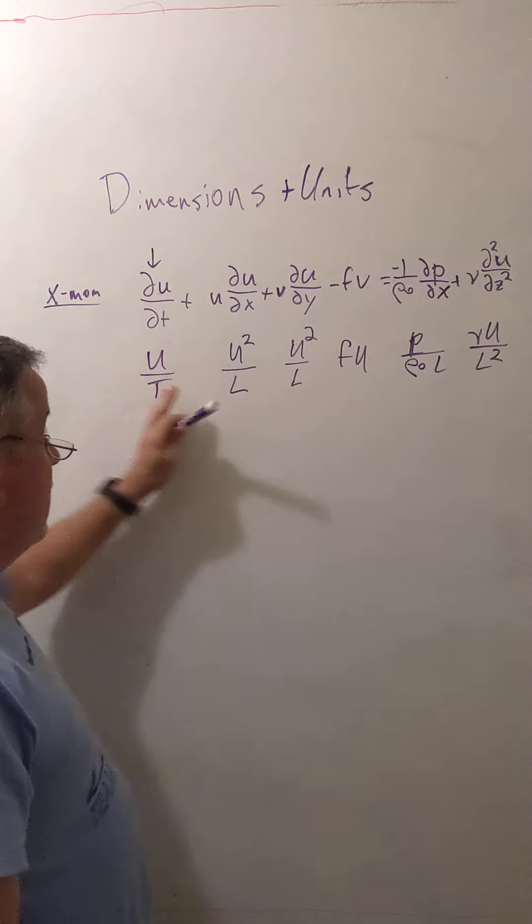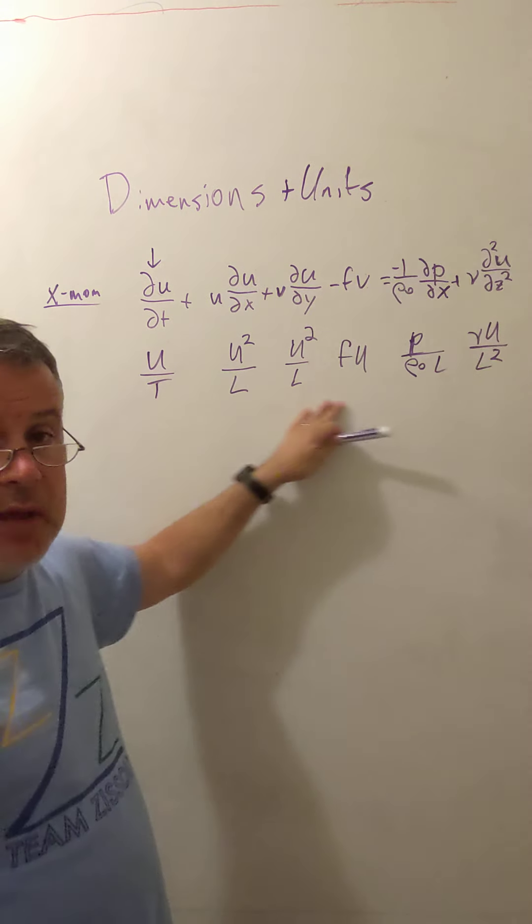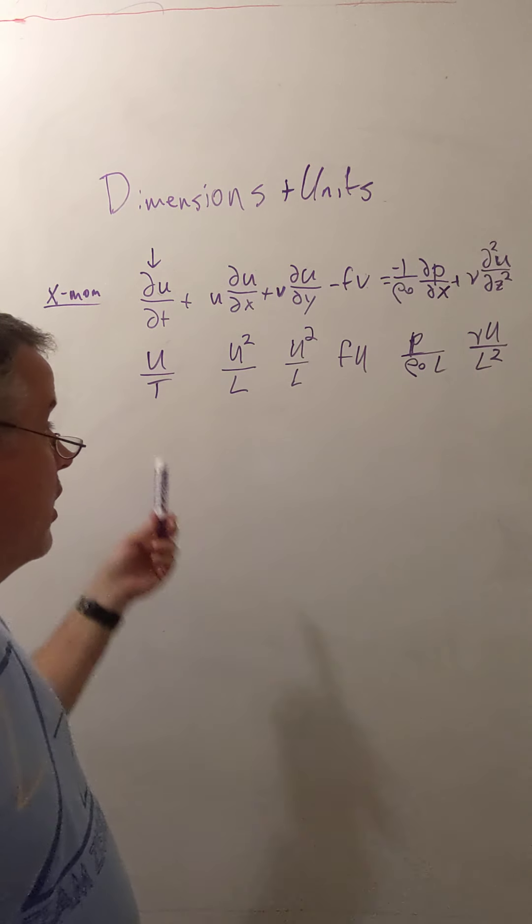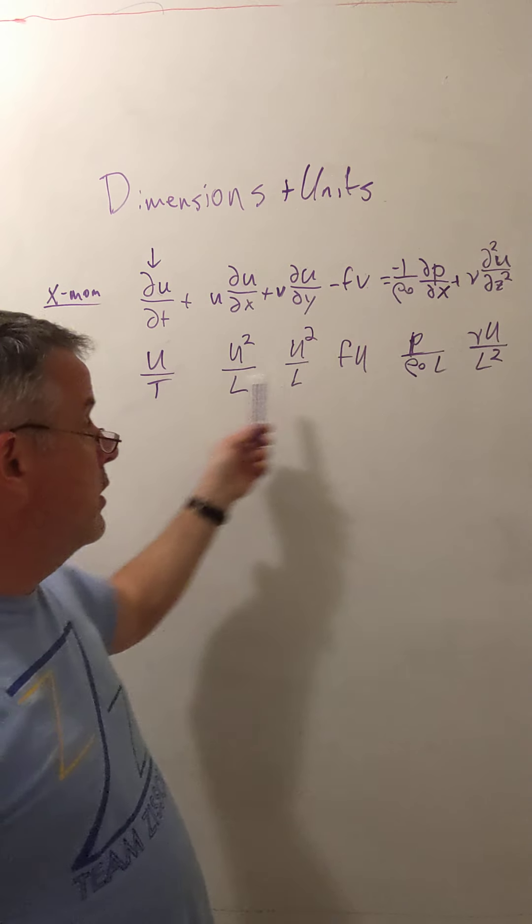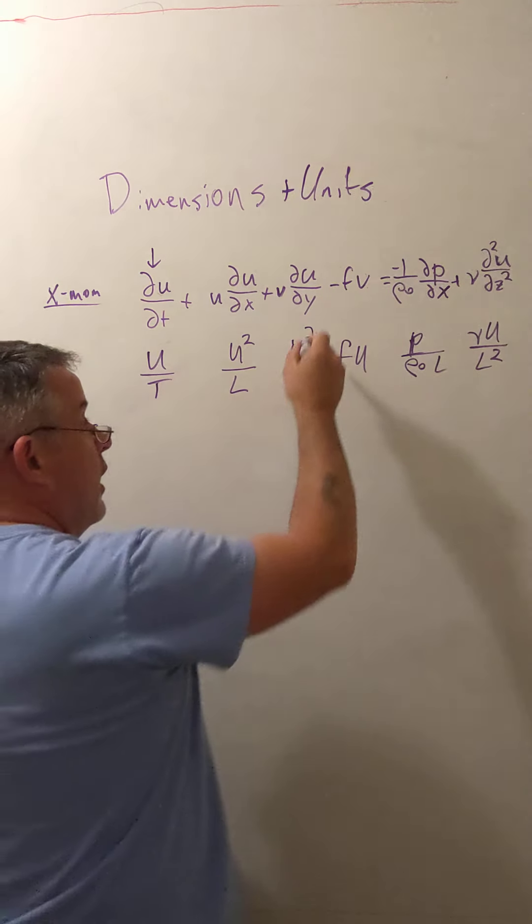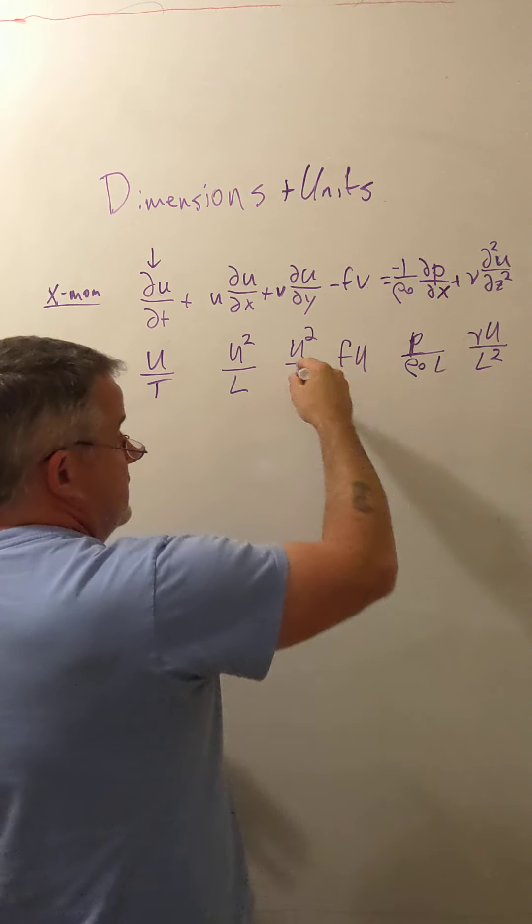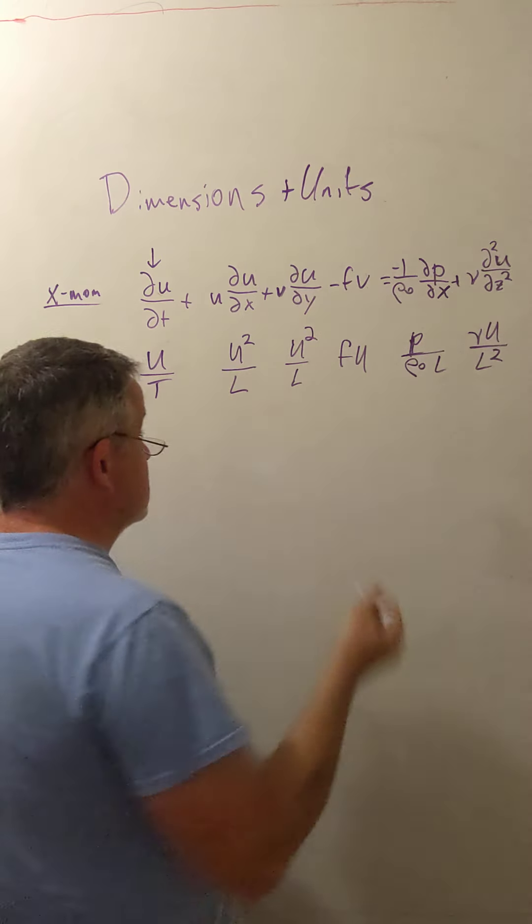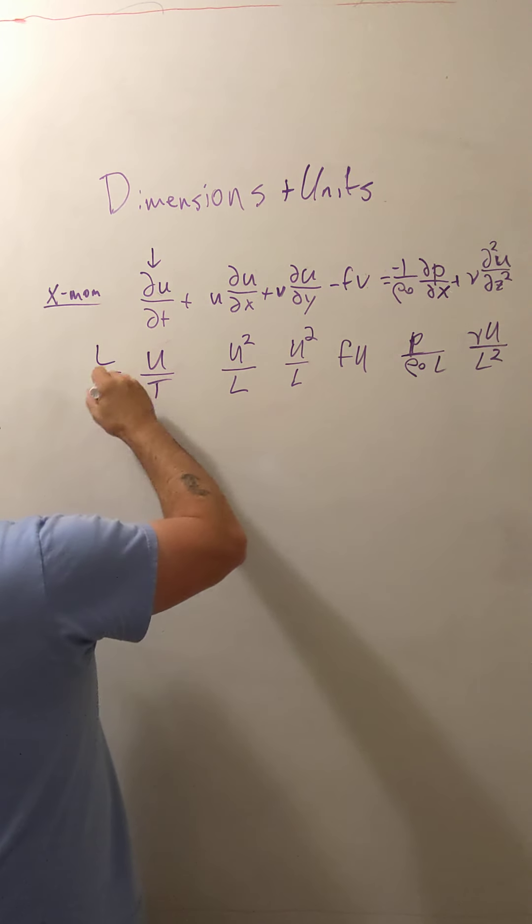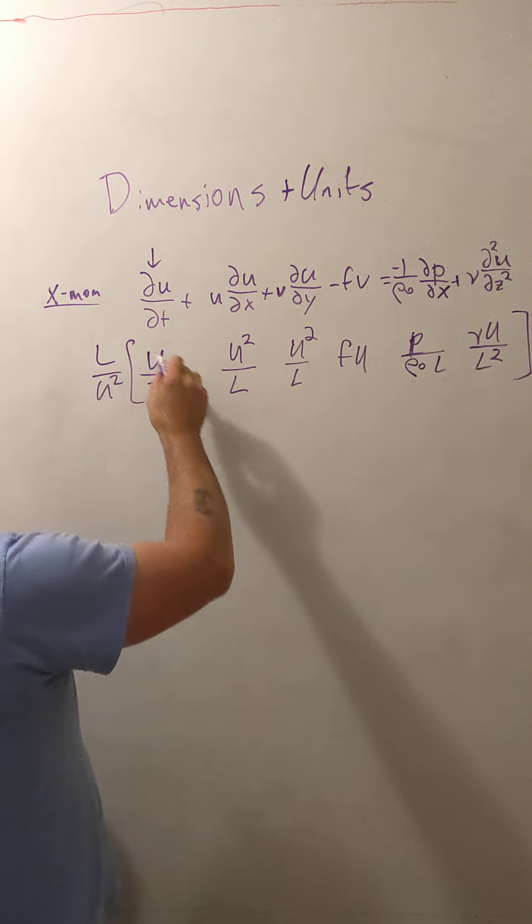Okay, that's cool. Now we can divide through by some convenient measure and make all of these terms dimensionless. So suppose you tell me, oh, I think u is about the size, the typical size of u for this problem, and the typical size of l for this problem are like this. I can divide through this whole equation by that. So I would multiply l times u squared times the whole thing. And what would I find?